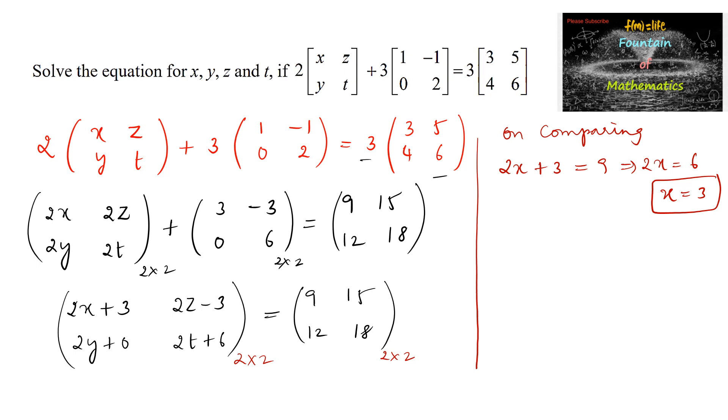And 2z minus 3 is equal to 15, which implies 2z is equal to 15 plus 3, 18. So we can write z is equal to 18 upon 2, which is 9.